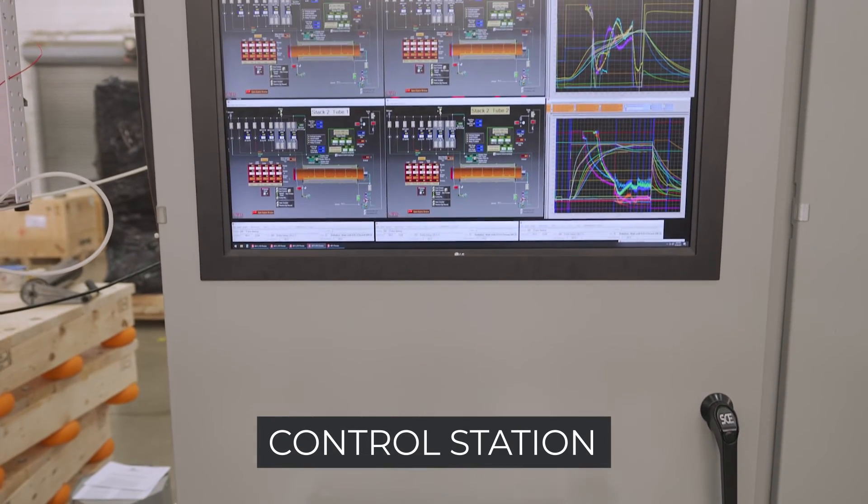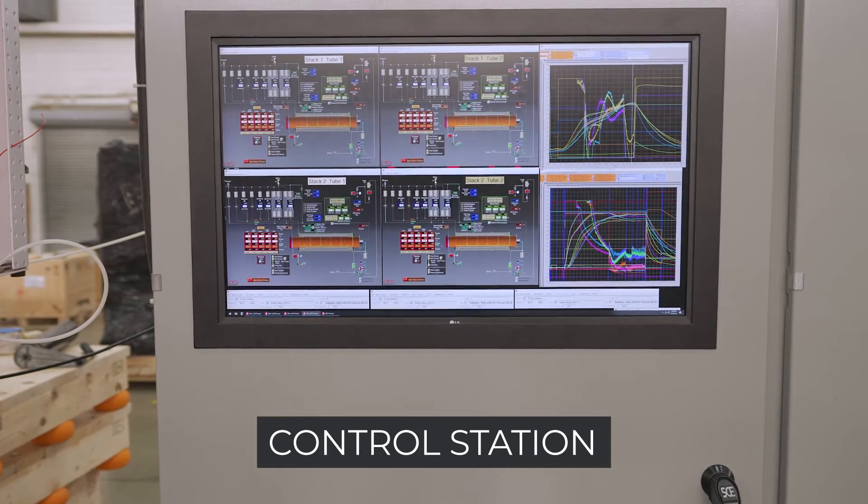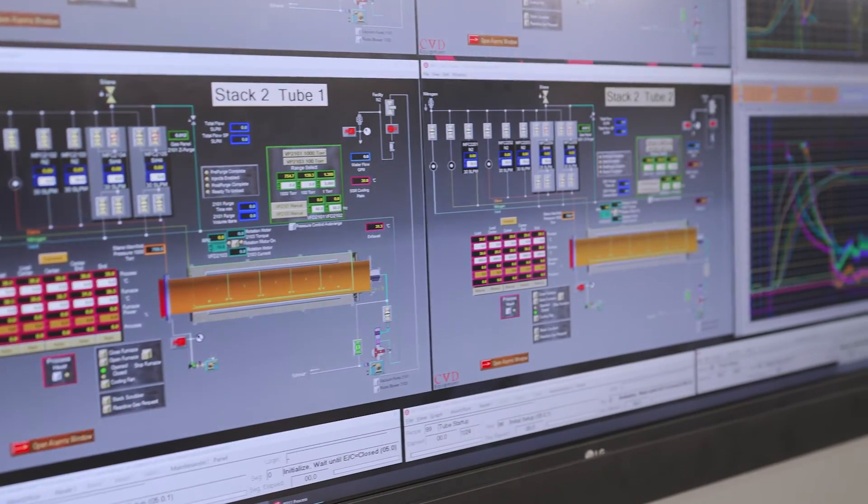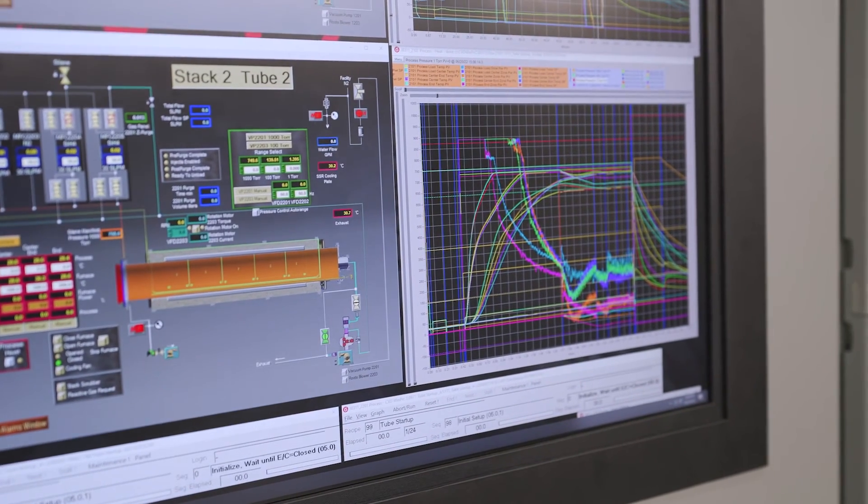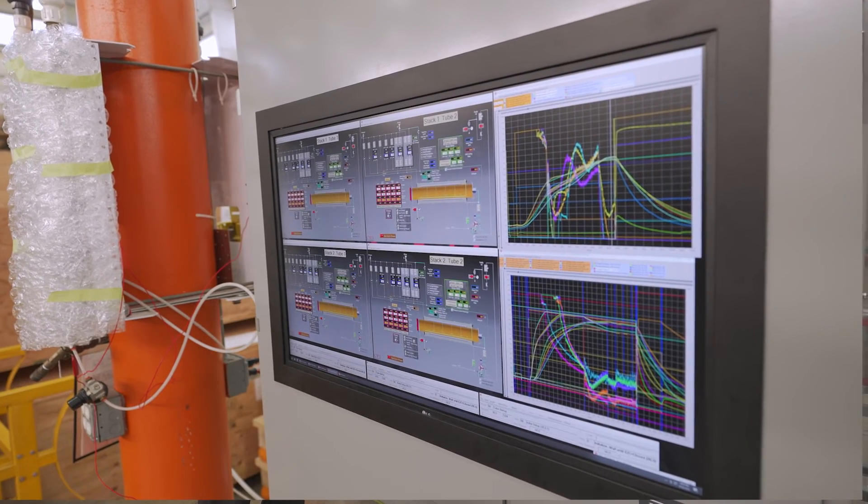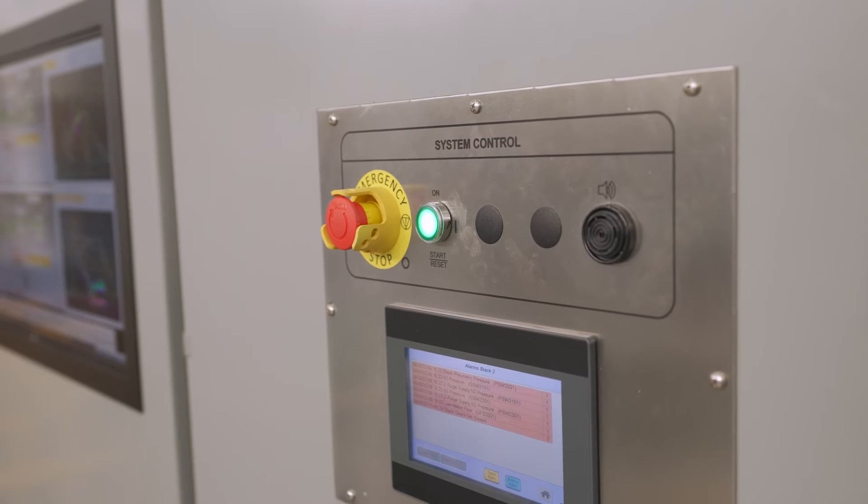This is the main control station. We have a large 4K monitor. We need all that resolution because we want to see the status of all four reactors and be able to plot lots of different graphs and tables. From here you can also edit and compose your recipes that you're going to be using on those process systems.